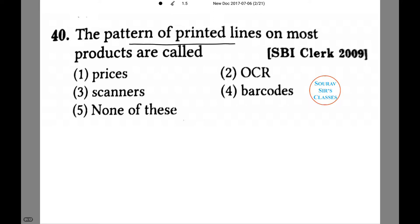The pattern of printed lines on most products are called: prices, OCR, scanners, or barcodes. Prices? No. Prices are the values that are printed numerically on most products. OCR is also not the answer. Scanners are the instruments with which these printed lines are read.